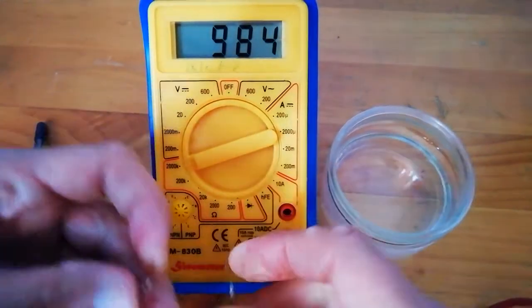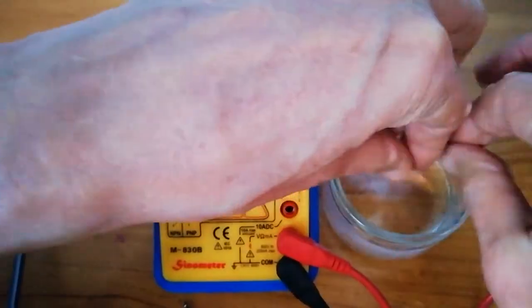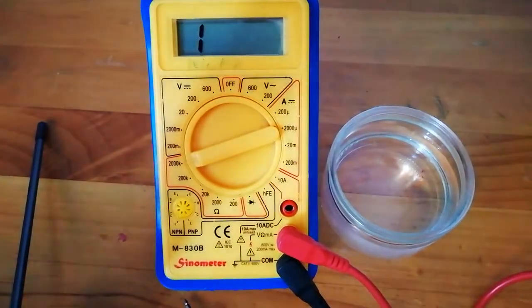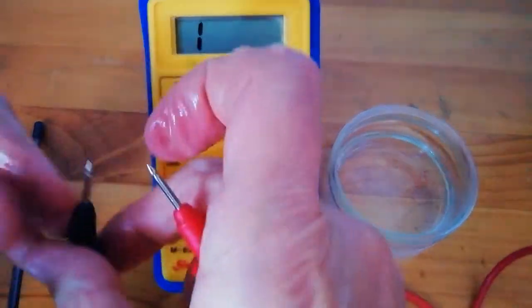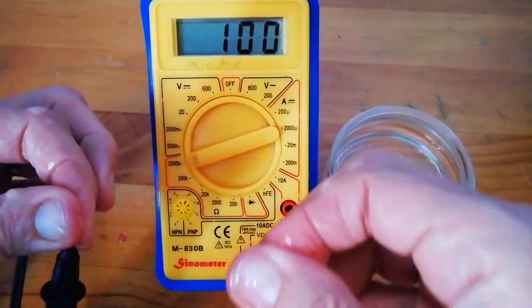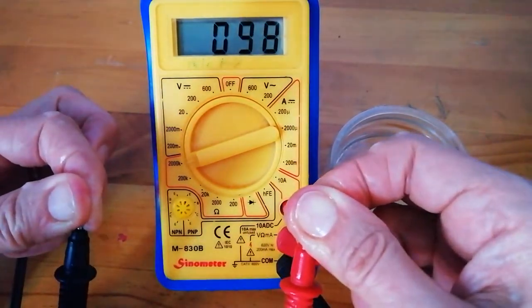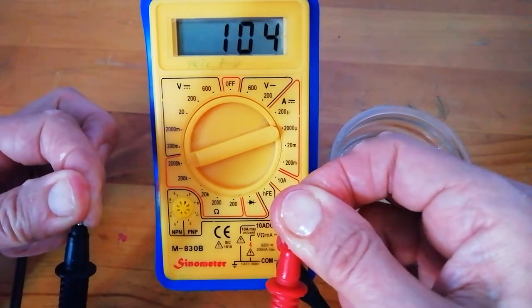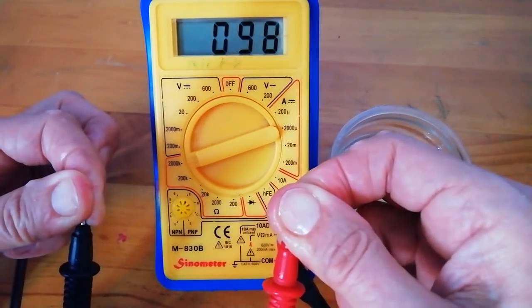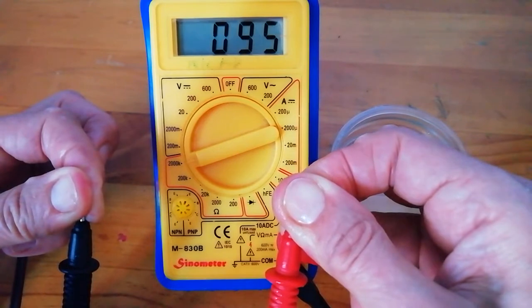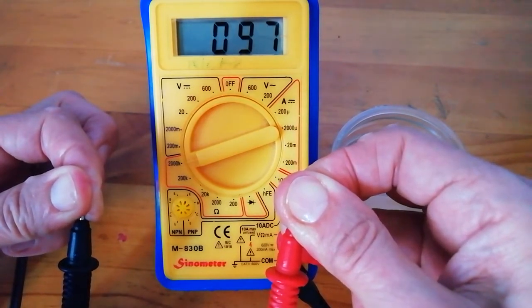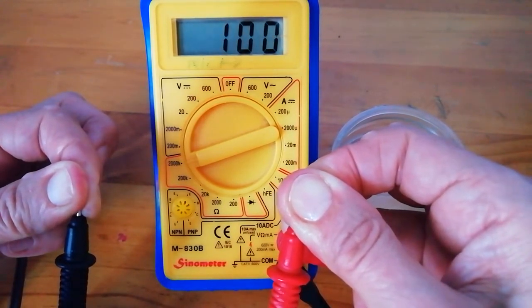Now what happens if I wet my skin? I've just dipped my fingers in water, that's all I've done, and I'm just going to hold the two probes. Around 950 and we've dropped - we've dropped actually by a factor of 10. Maybe not quite a factor of 10, but around 95 rather than 950. I'm around 95,000 ohms instead of 950,000 ohms.